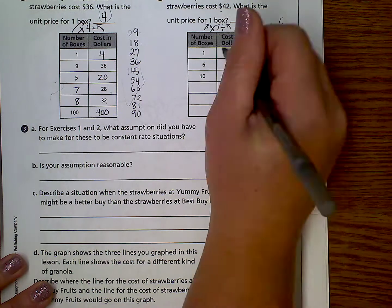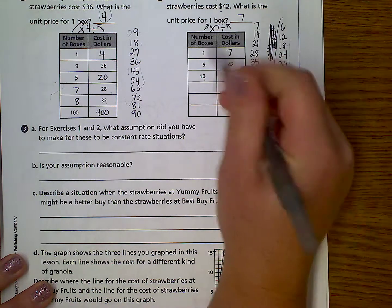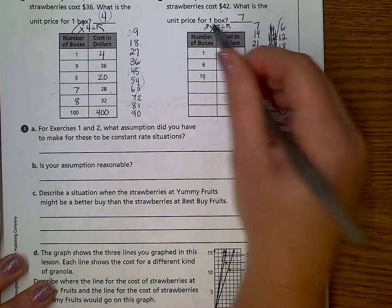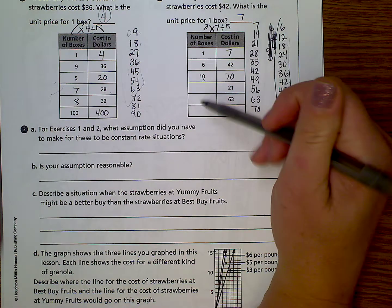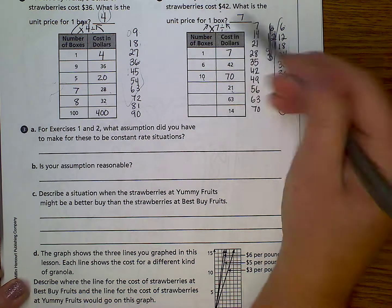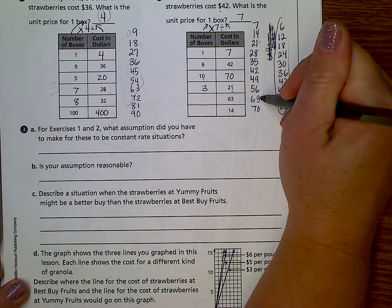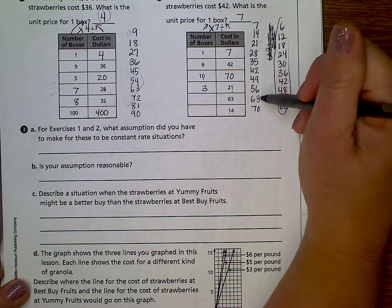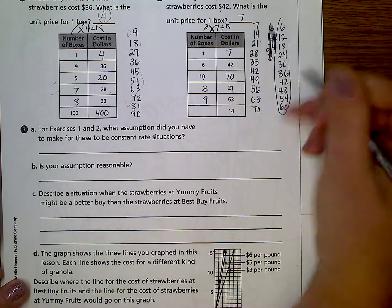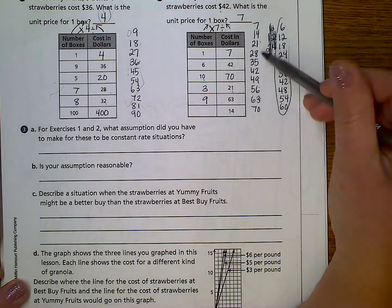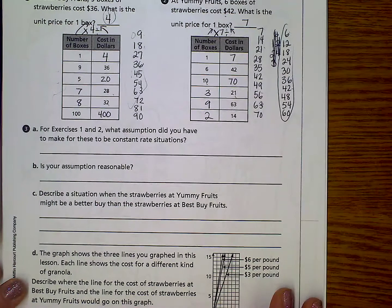Okay, so one box is 7. 10 boxes would be 70, because we're multiplying by 7. Remember to put that equation up at the top so it helps you. So, now if we have to go 21 to 7 is 3. 63 divided by 7 is 1, 2, 3, 4, 5, 6, 7, 8, 9. 14 divided by 7 is 1, 2.